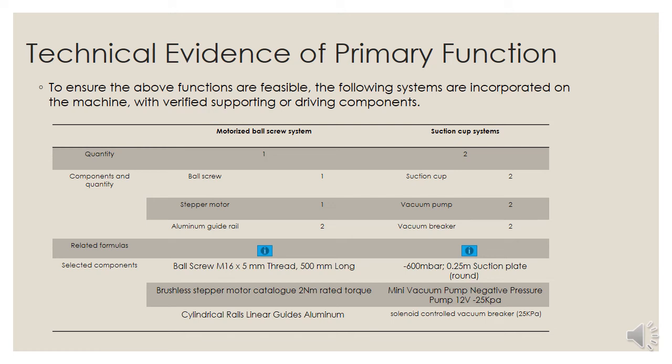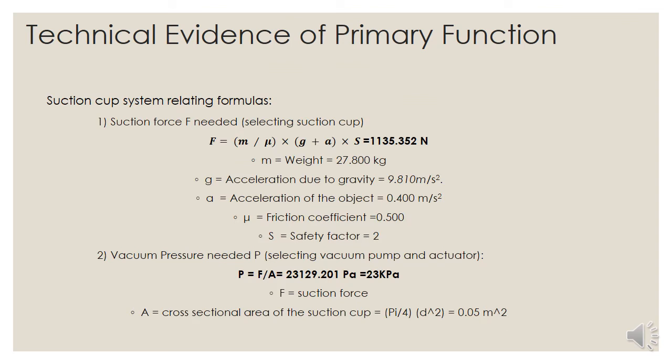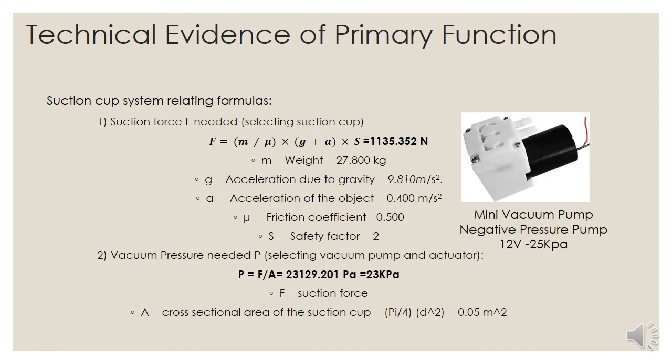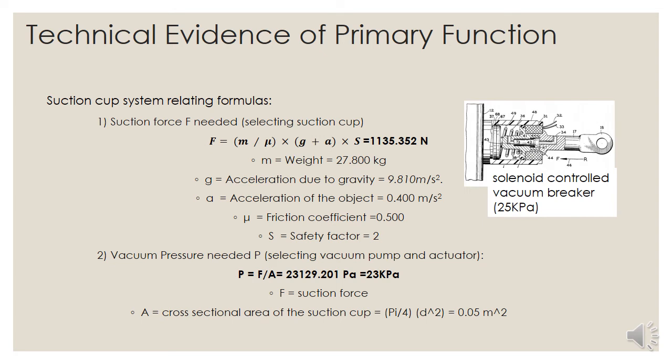Moving on to the suction cup system. The suction cup system is used to make sure the machine sticks to the window under regular and irregular operation conditions. Each system consists of two suction cups, two vacuum pumps, and two vacuum breakers. Same as the motorized ball screw system, the components are verified with formulas. First, the suction force F is calculated for selecting a suction cup. With a safety factor of 2, F is equal to 1135.352 N. Thus, a -600 N/bar round plate suction cup with a diameter of 0.25 m is selected. Based on this, the vacuum pressure P is calculated to be 23 kPa and it can be used for selecting the vacuum pump. Here is the vacuum pump selected. It can provide a negative 25 kPa of pressure with a 12 volt power supply. Also, a corresponding vacuum breaker with a solenoid control system is selected.